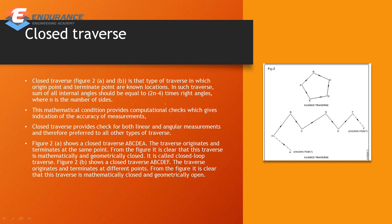In closed traverse, we can calculate internal angles, such as for a pentagon shape. Closed traverse provides a check for both linear and angular measurements and is therefore preferred to all other types of traverse because it offers better accuracy and easier checking.